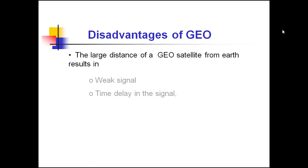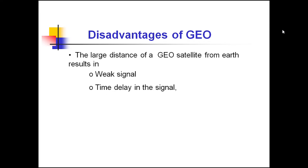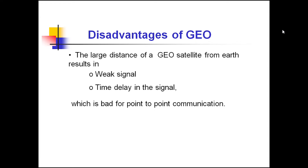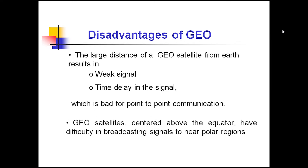The main disadvantage of GEO is the received signal is weak in strength. There is a time delay in the signal, and therefore it is not suitable for point-to-point communication. Geostationary satellites centered above the equator have difficulty in broadcasting signals to near polar regions.